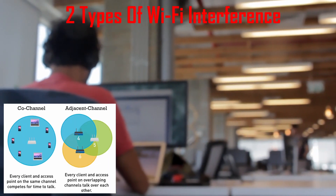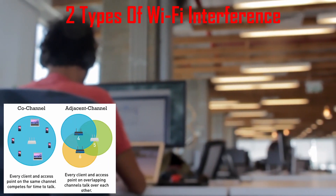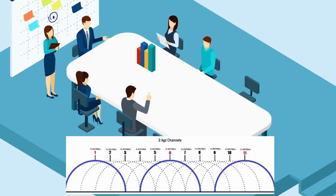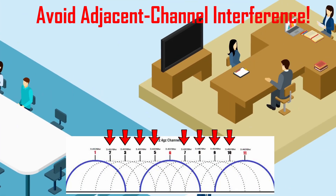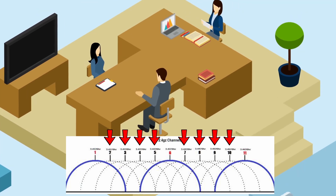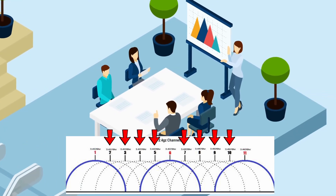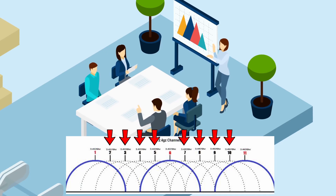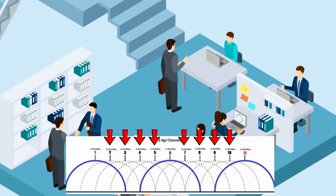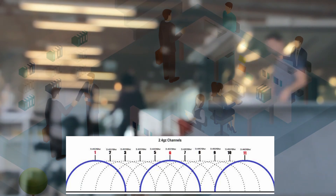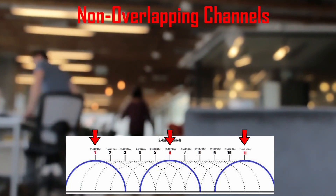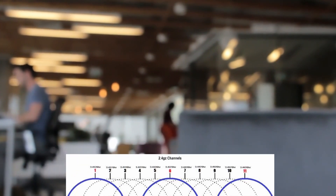The channel interference you want to avoid is adjacent channel interference, which means every client and access point on these overlapping channels talks over each other. This in turn crushes your throughput, resulting in slower Wi-Fi speeds.